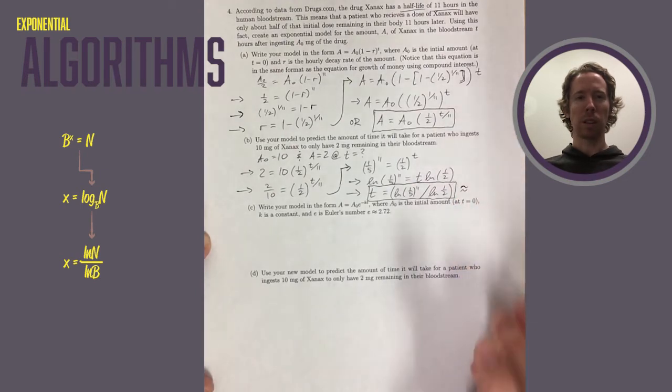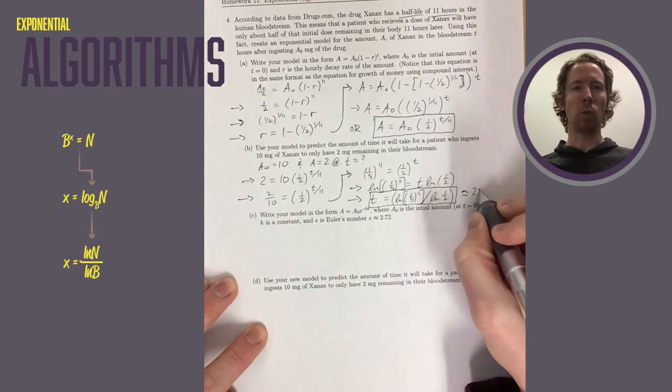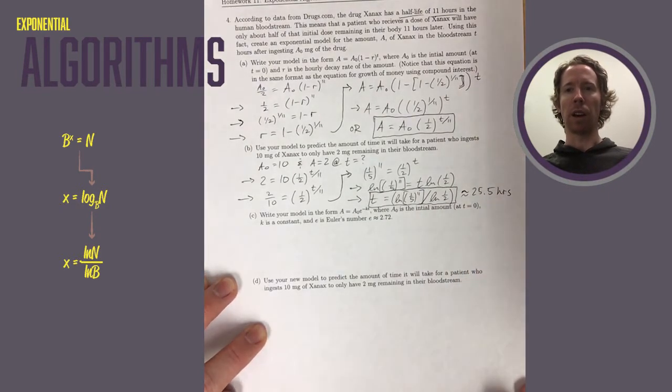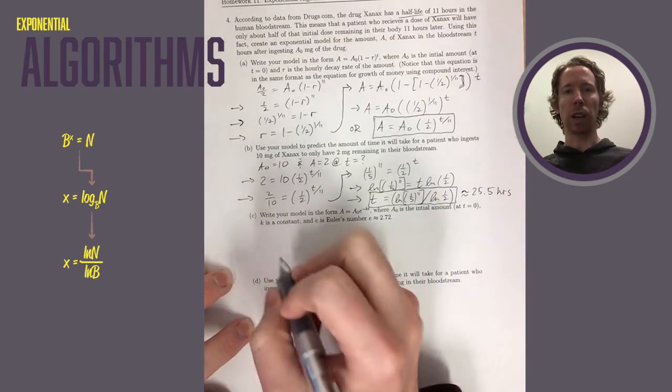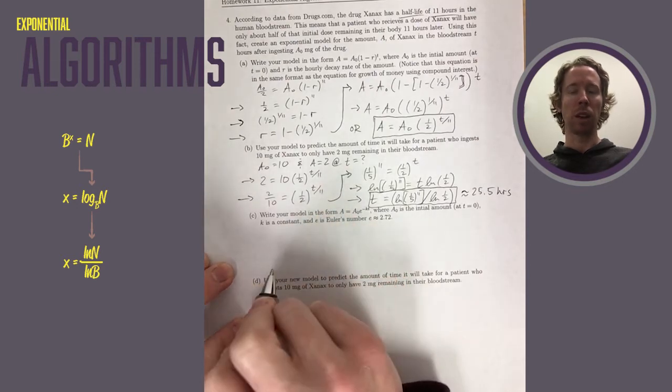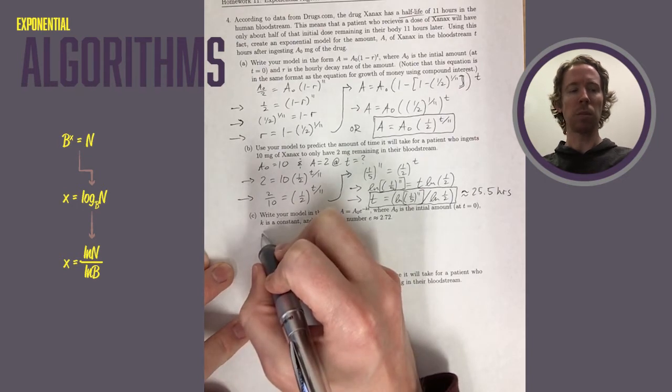We can approximate this using a calculator. I punched this into Wolfram Alpha, a good calculator online that's free. And I got 25 and a half hours. So that's how long it would take for this patient's Xanax in their bloodstream to go from 10 milligrams down to 2 milligrams. You can imagine this could be pretty useful for doctors and nurses to know this kind of thing.